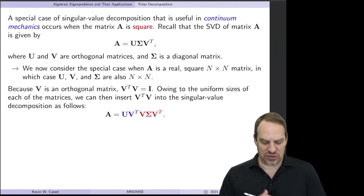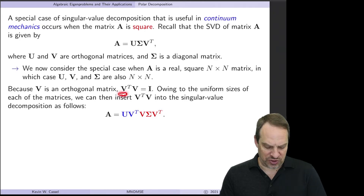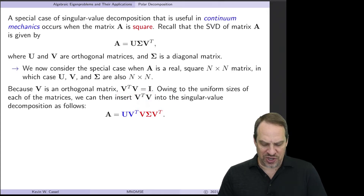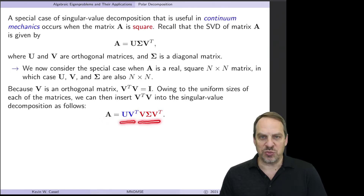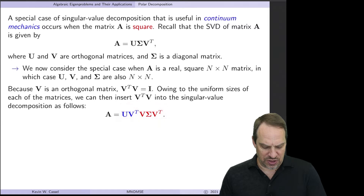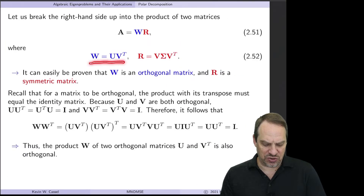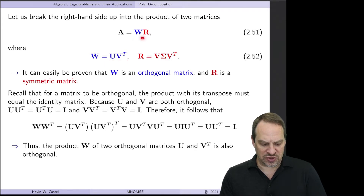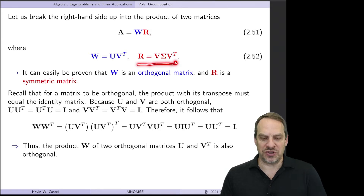Let's take a look at the singular value decomposition in that special case. Remember that V is orthogonal, therefore V transpose V is just equal to the identity matrix. So we can insert that into our SVD. I'm going to rewrite A as U V transpose times V sigma V transpose. We're going to take the blue portion and the red portion and designate those as W and R. So A is decomposed into W, which is U times V transpose, times R, which is V times sigma times V transpose.